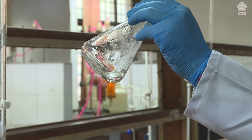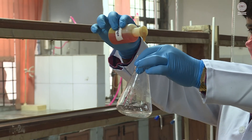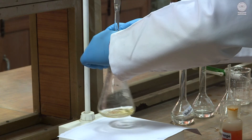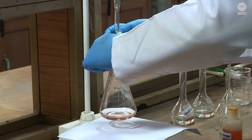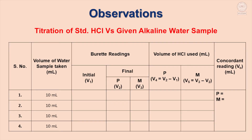The volume reading V2 is noted from the burette after the pink color disappears. After discoloration, one to two drops of methyl orange are added into the same solution. The titration is carried out till the yellow colored solution turns pink. The volume V3 is noted. All readings — V2 and V3 — are recorded in the table, and the experiment is repeated two to three times till concordant readings are obtained. V1 is the initial volume, V2 is the end point for phenolphthalein, and V3 refers to the end point for methyl orange.